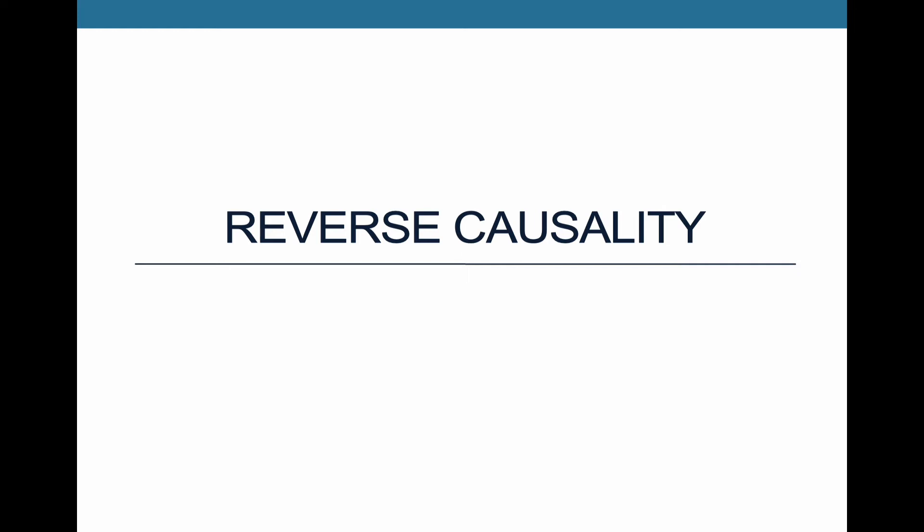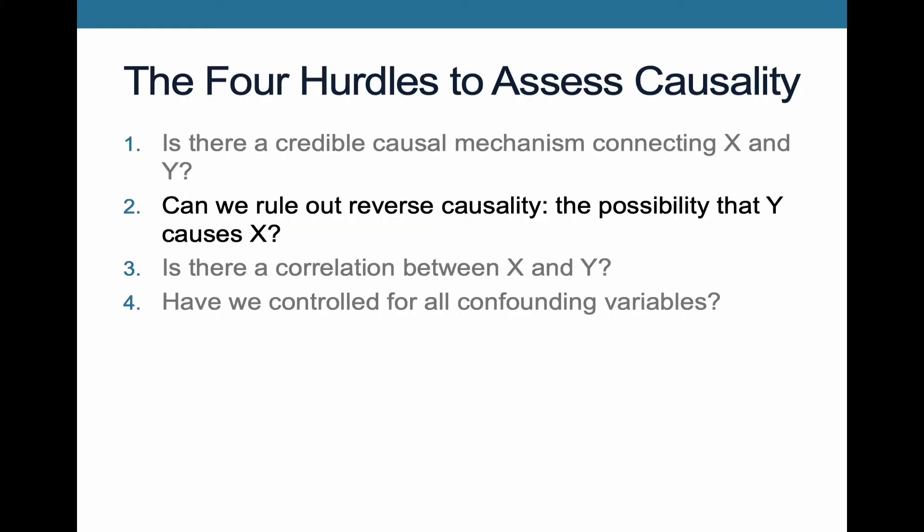In this video lecture, we're going to discuss the phenomenon of reverse causality and the ways that the threat of reverse causality could cause problems for trying to assess a causal relationship in a study that we're doing. Going back to these four hurdles to assess causality, right now we're talking about the second hurdle, which is that we rule out the possibility that we have reverse causality — in other words, that y causes x. If you have reverse causality, that means that you've flipped around which one is the cause and which is the effect, so you're not actually showing the causal relationship that you think you are.